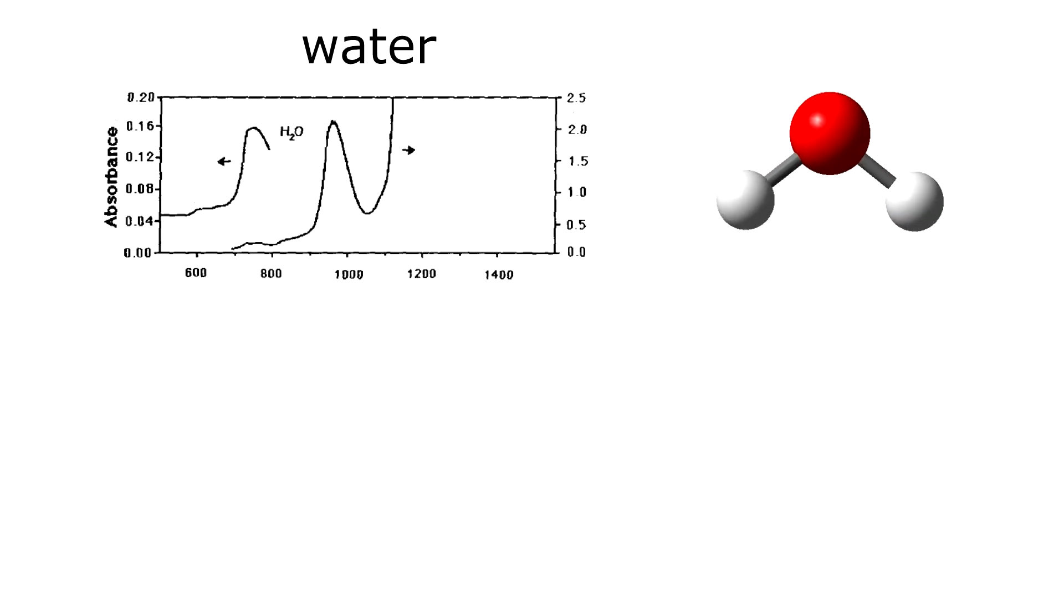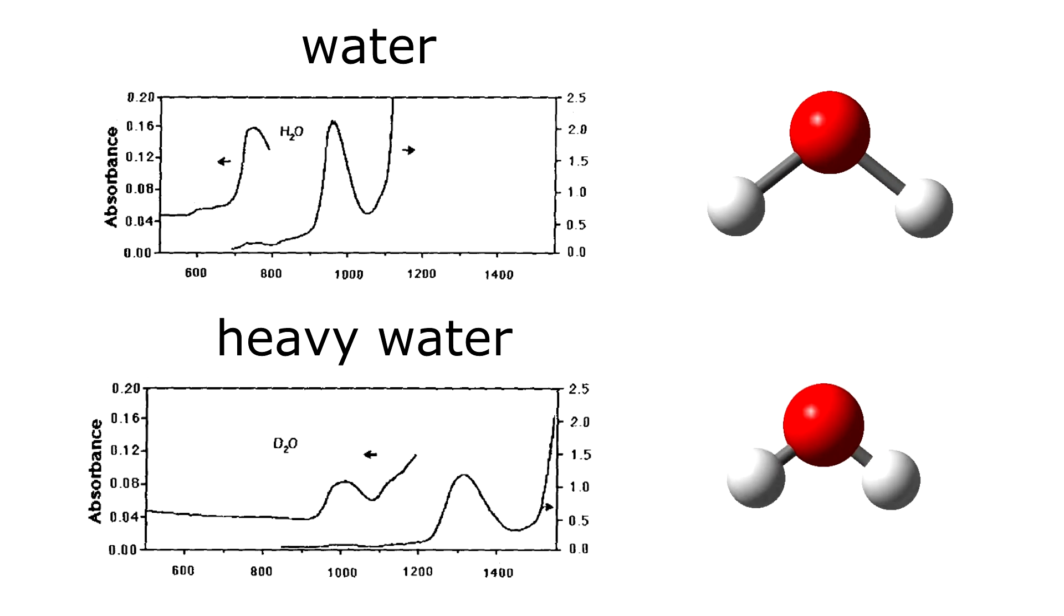The exchange of protium with its heavier brother deuterium shifts the absorption line from the red to the infrared and discolors the water.